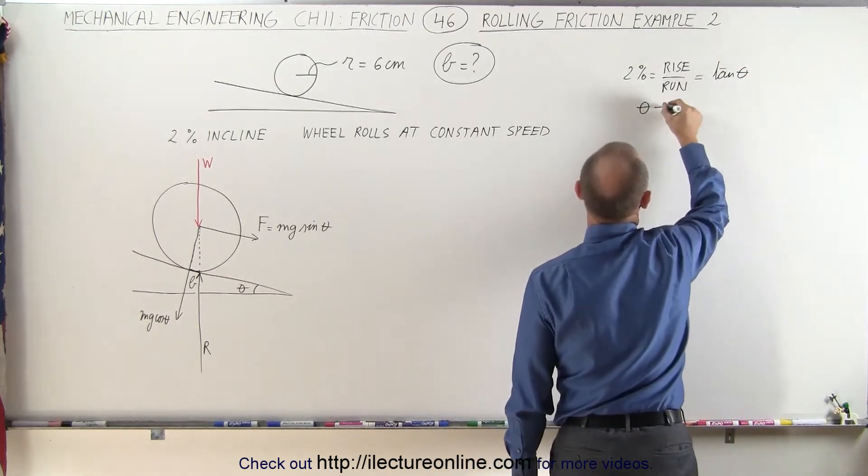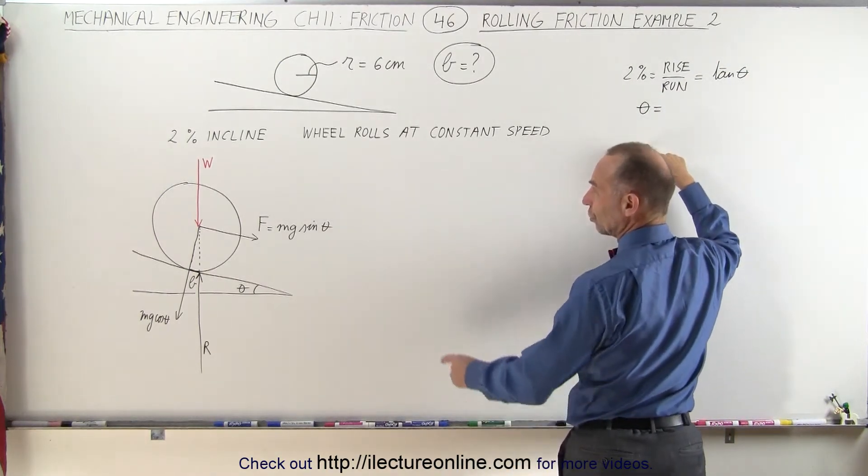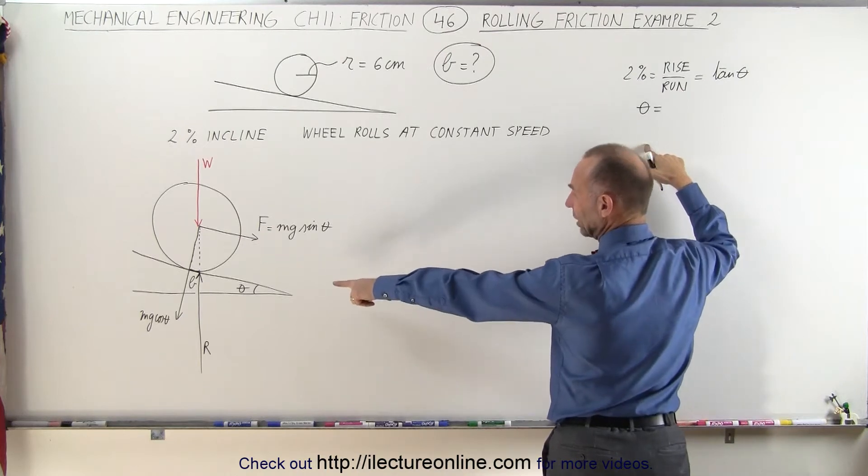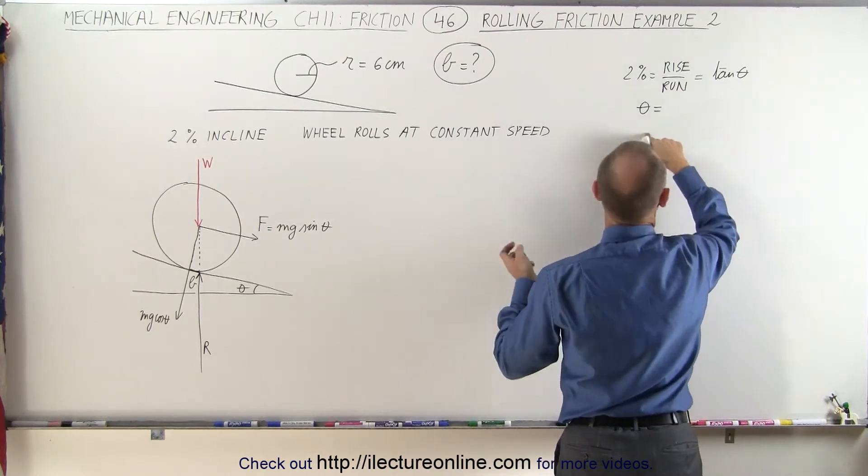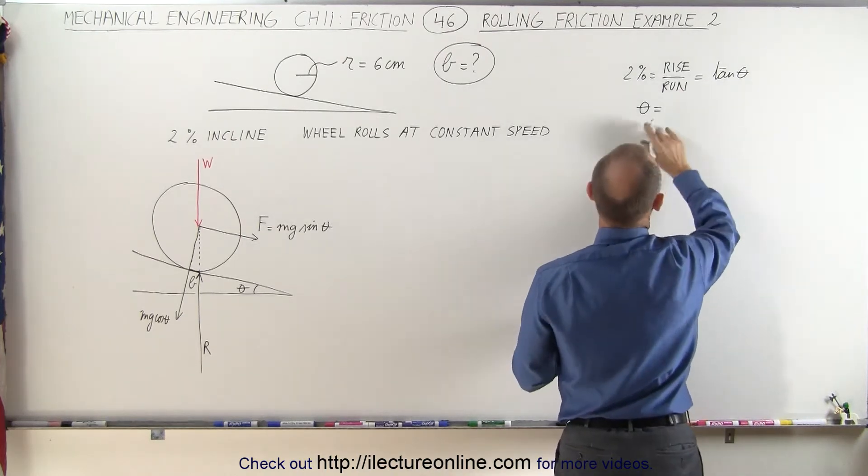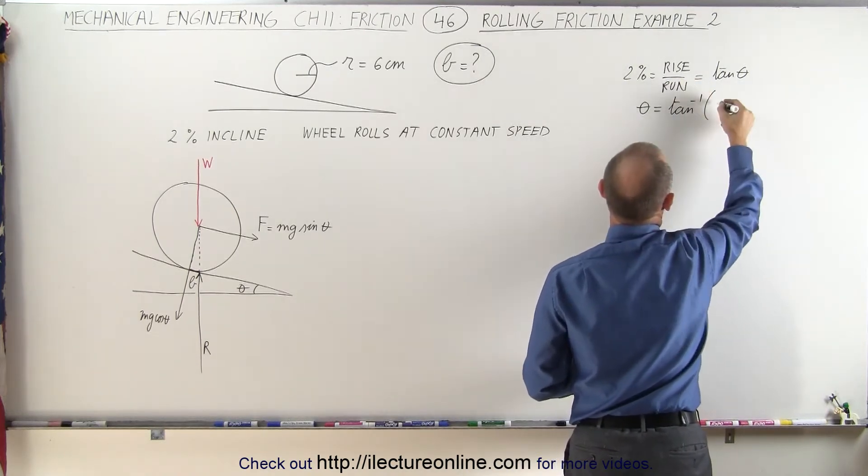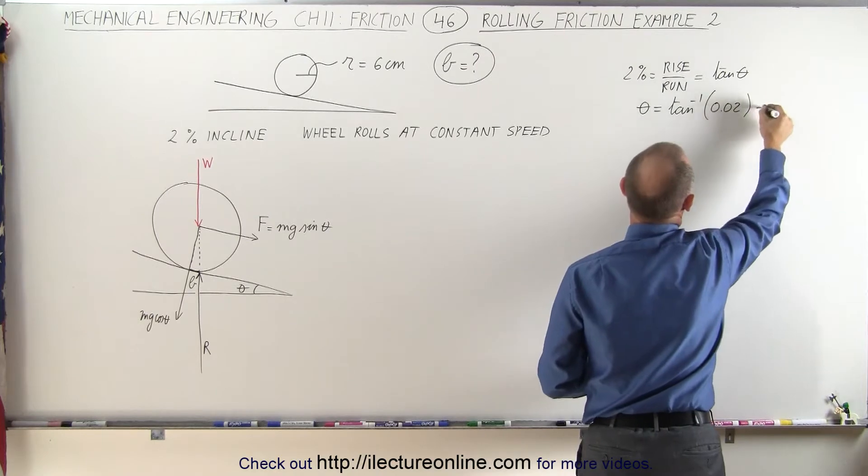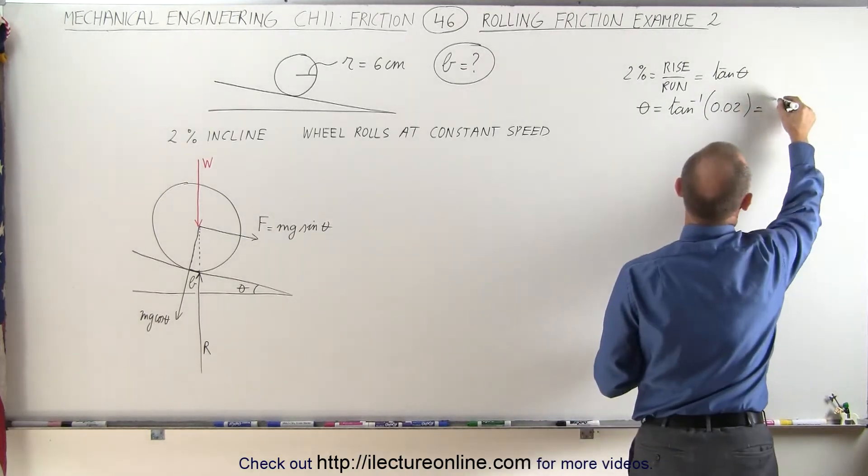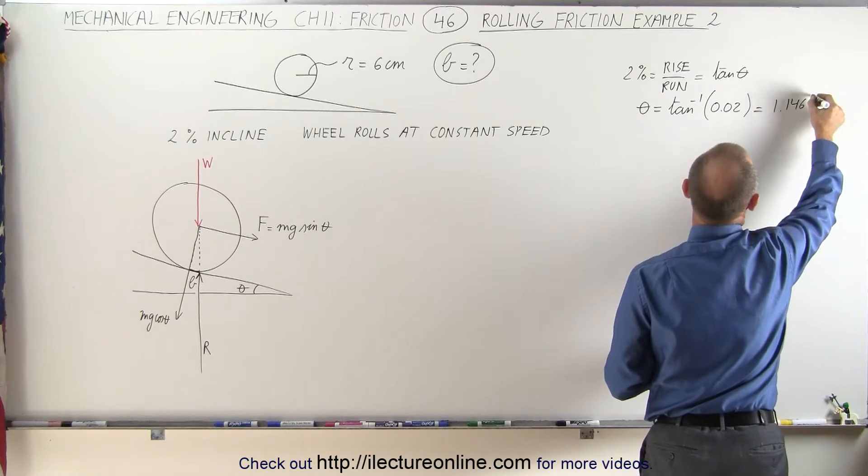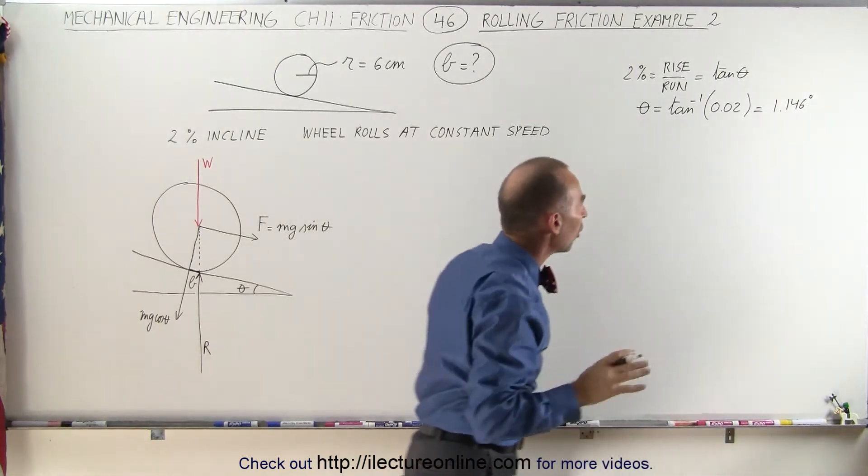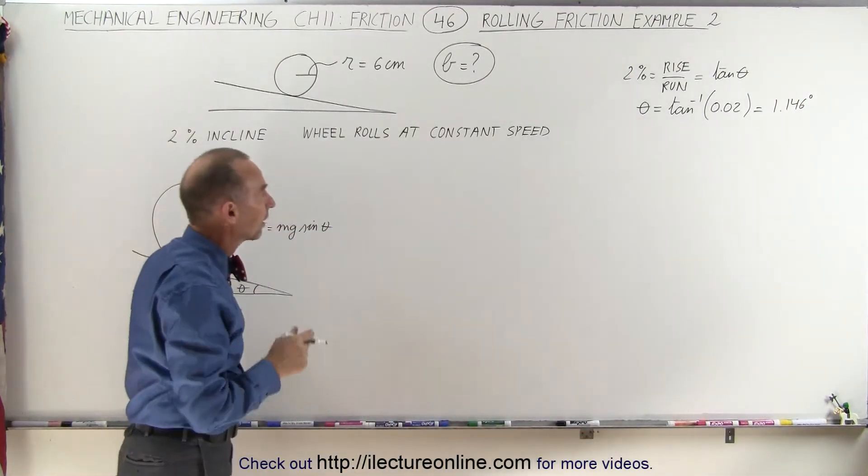In other words, theta is equal to—and of course I shouldn't use the same angle because I used theta already. Well no, I can use that. That's the angle I'm looking for. So theta is equal to the arctangent of 2% which is 0.02, and that's 1.146 degrees. So it's a very small angle, not a very steep incline.